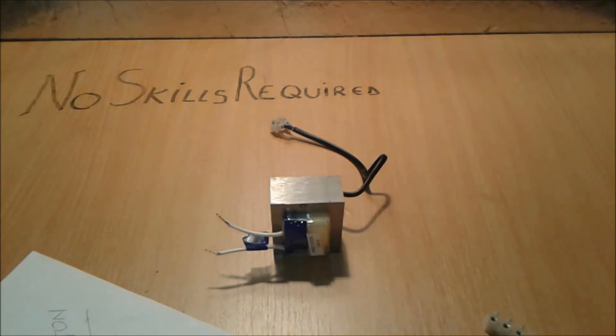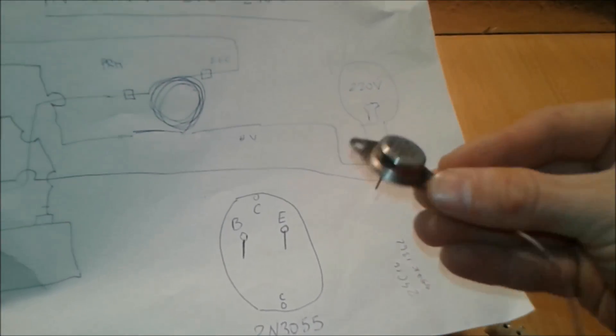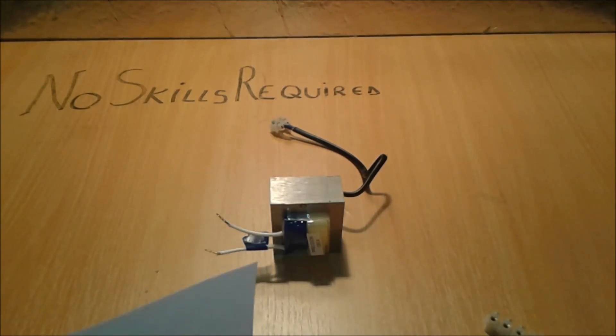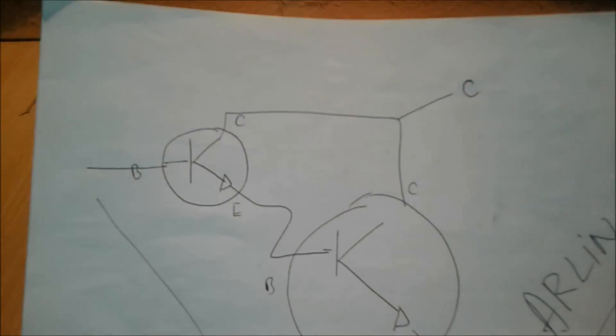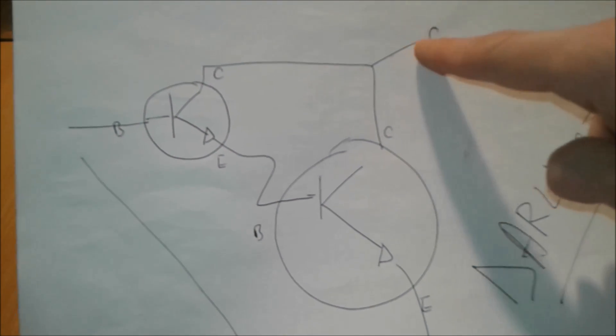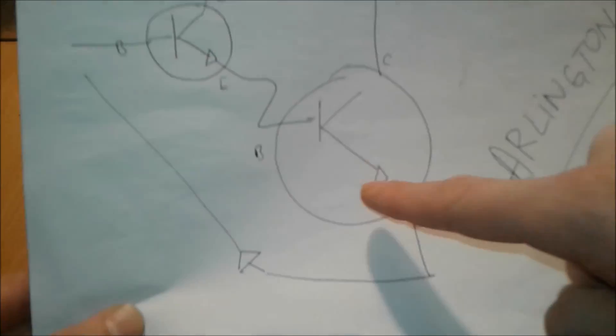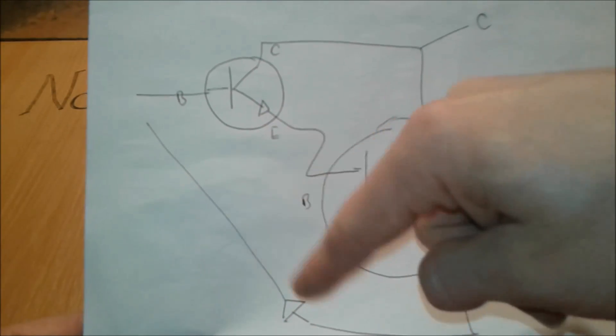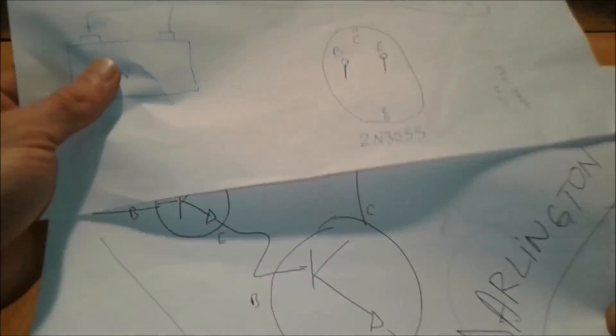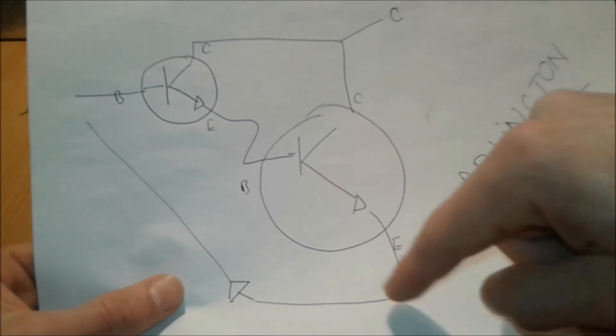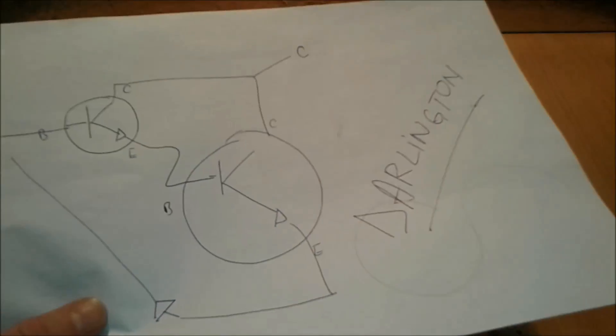Instead of just one transistor like this one, 2N3055, we're going to use two of them connected in a Darlington pair. If you don't know what is a Darlington pair, you can Google it and you're going to find something like this. Basically there are two transistors connected from collector to collector, from emitter to base. We're going to have the emitter here, the base here, the diode between them like in the other diagram you see, and that's just a small connection between this emitter to this base. The rest is going to be the same. Let's get started folks.